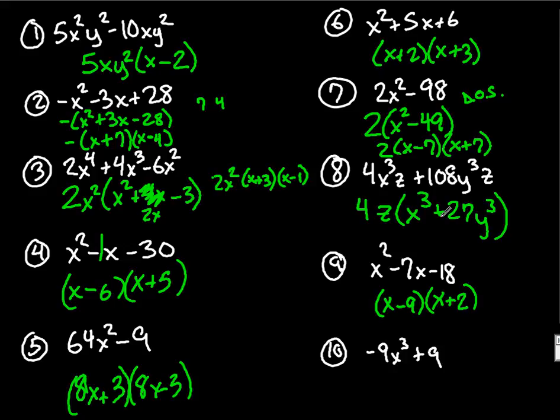And number 10, I can factor out a negative 9 because of a negative out front, you definitely want to factor out a negative. It'll leave you with x cubed minus 1. If it was x squared minus 1, you could factor that more, but because it's x cubed, we're not able to do that yet.